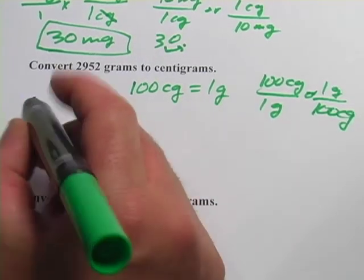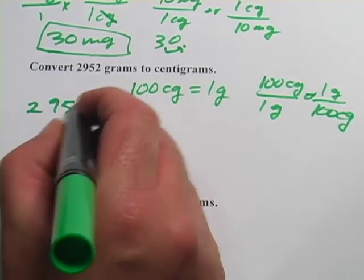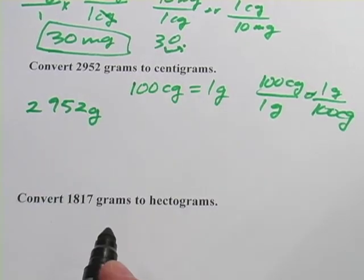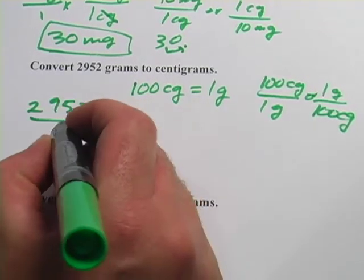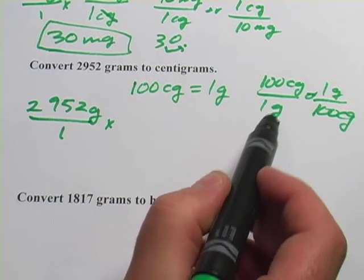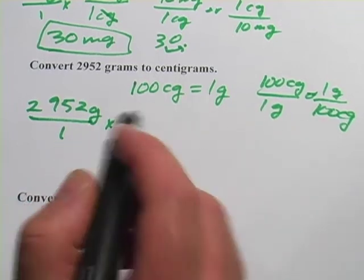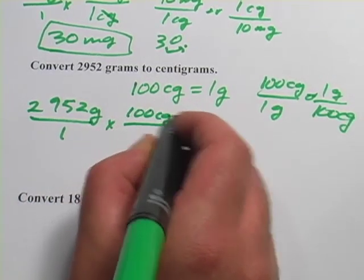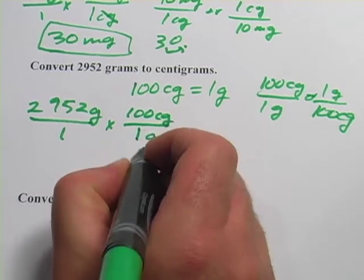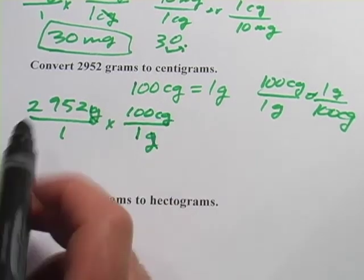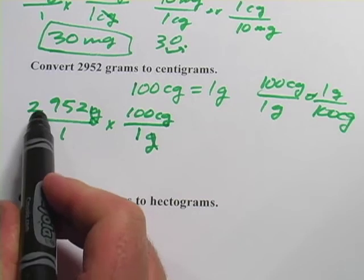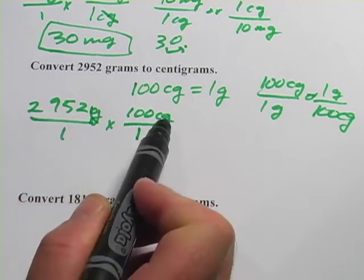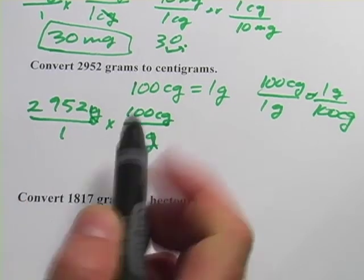And we'll set up our problem, 2,952 grams. And we want to choose the one with grams on the bottom, because grams is on the top over here. So we get 100 centigrams over 1 gram, the grams cancel. And we're going to be multiplying 2,952 times 100 on the top, 1 times 1 on the bottom.